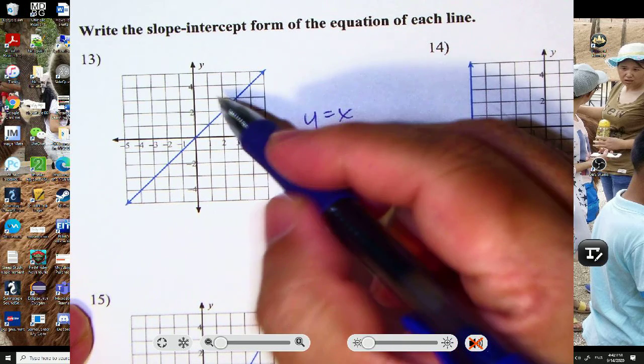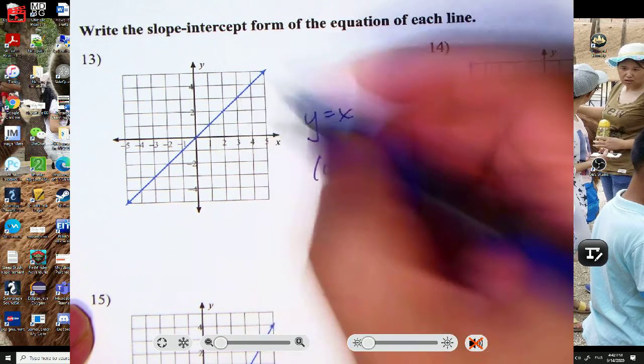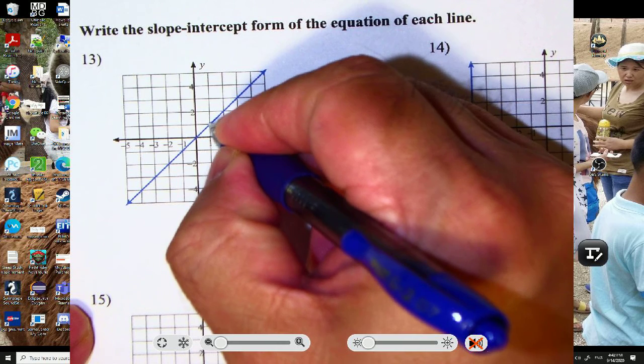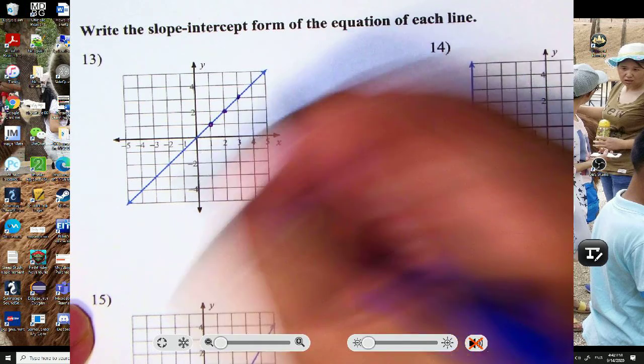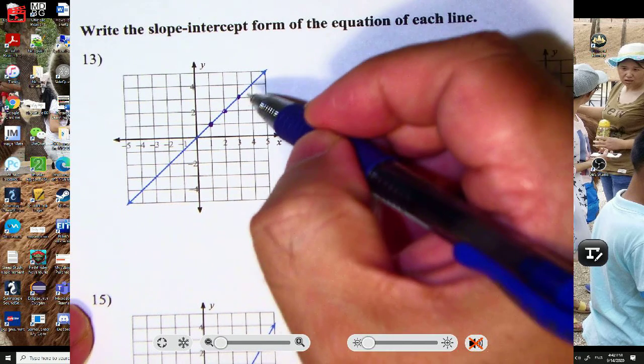What is the slope? So pick a lattice point. A lattice point is where the grid intersects. So these are lattice points, and the line is going through those corners.